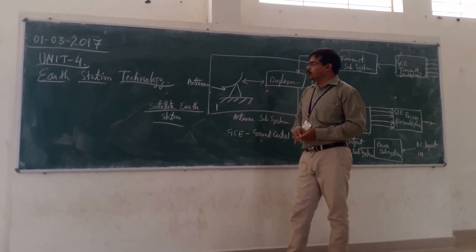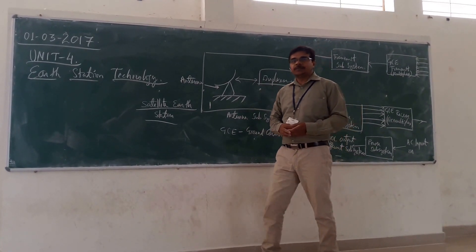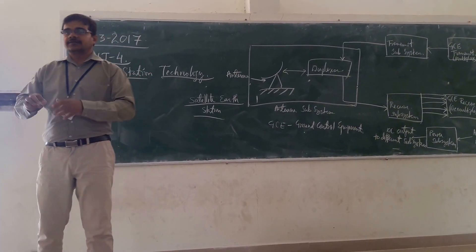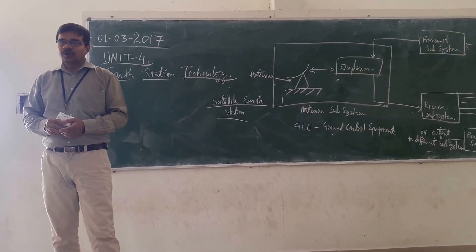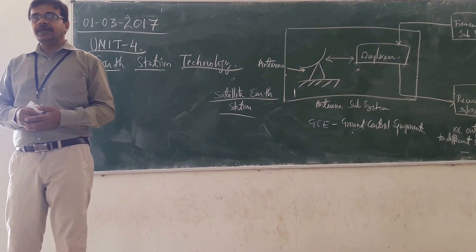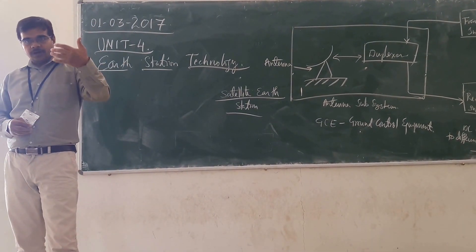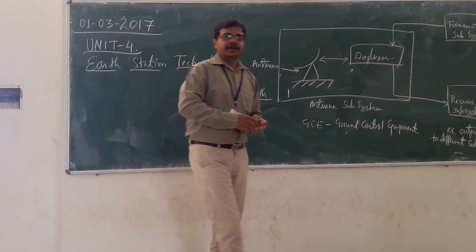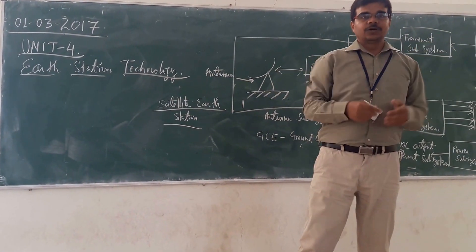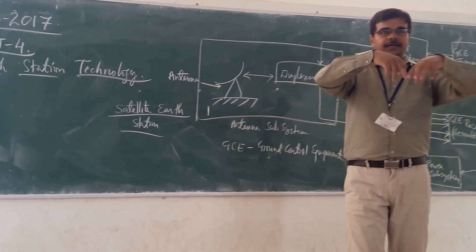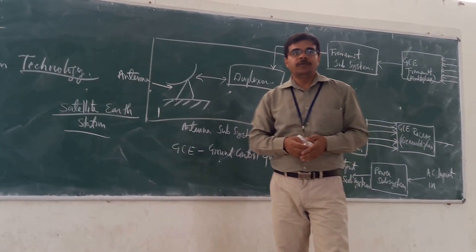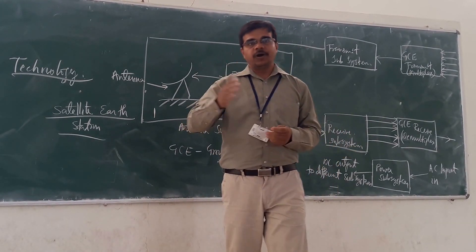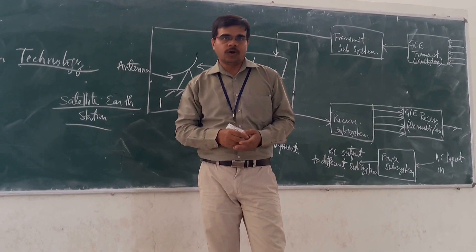Today we will start with Earth Station technology. Suppose if you are going for satellite communication, it involves the satellite and the Earth Station. Combinedly we are getting the satellite communication. If you are considering the cost involved, it includes the managing cost of the satellite, the launching cost of the satellite, and the Earth system cost. We need some space on the Earth so that we can control the satellite, monitor its operation, and as per requirement do little modifications so that it can move in its own orbit.